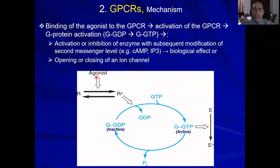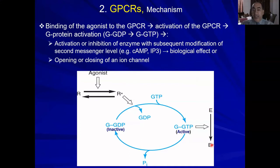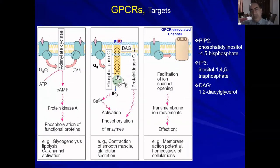The mechanism: first, binding of the agonist to the receptor converts it from the resting state to the activated state. The activated receptor activates the G-protein from the GDP status (off, inactive) to the GTP status (active form). This in turn activates the effector from inactive to active status. This active effector could be an enzyme or an ion channel, as we'll see — this is very important.